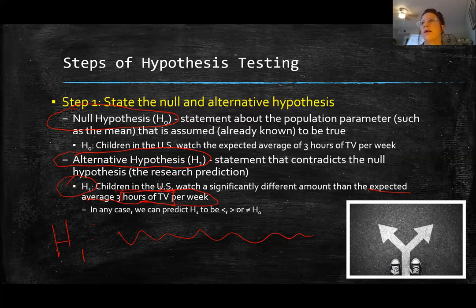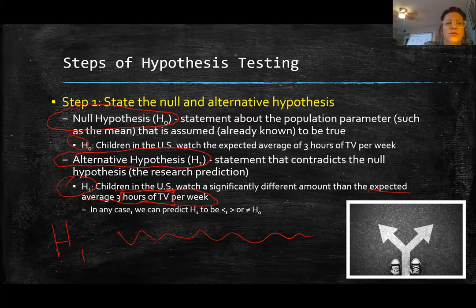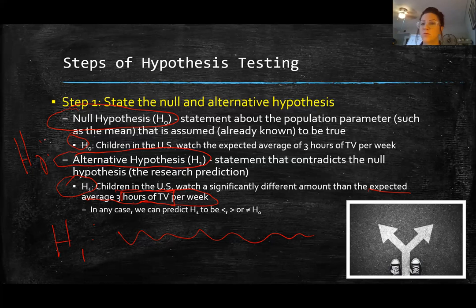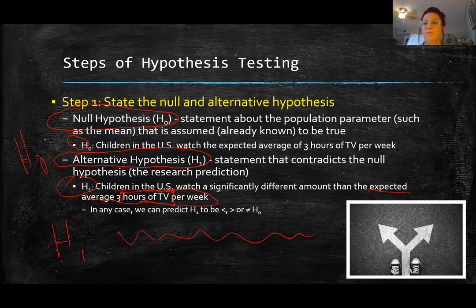When you state your hypothesis, you have to give both your null and your alternative. The null (H0) is: children in the US watch the expected average of three hours per week — because that is what we know to be true before testing. You will be stating both, and they need to be stated with the notations H0 and H1, followed by your predictive statement.